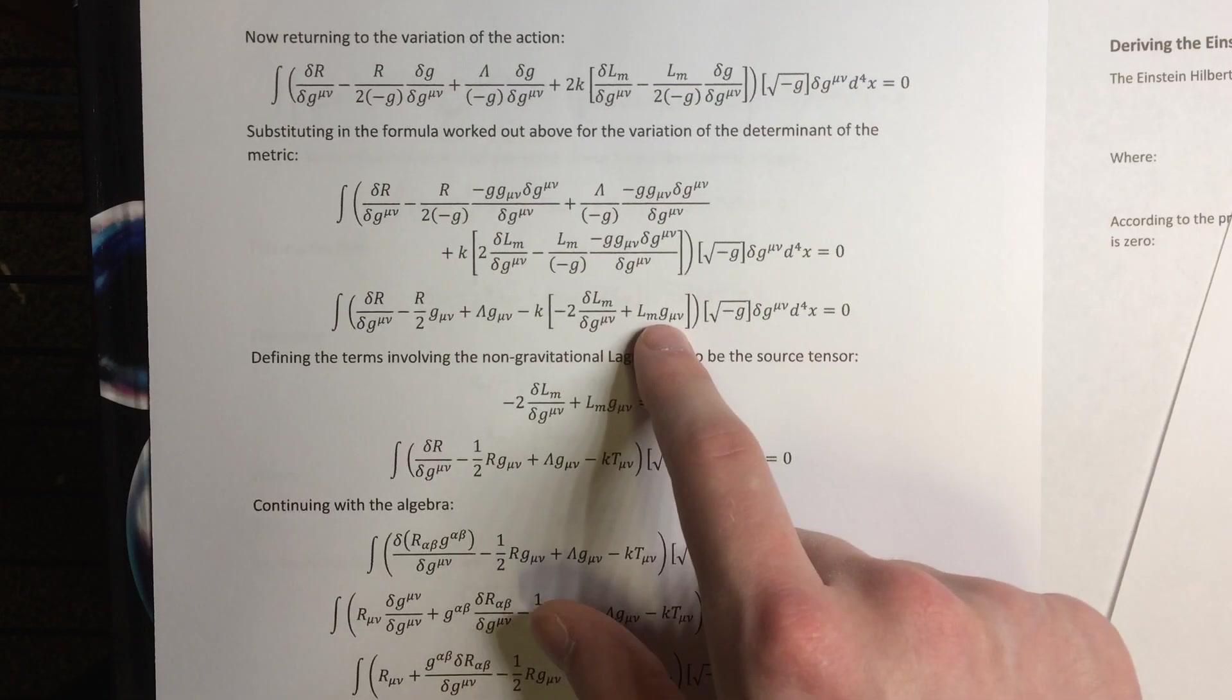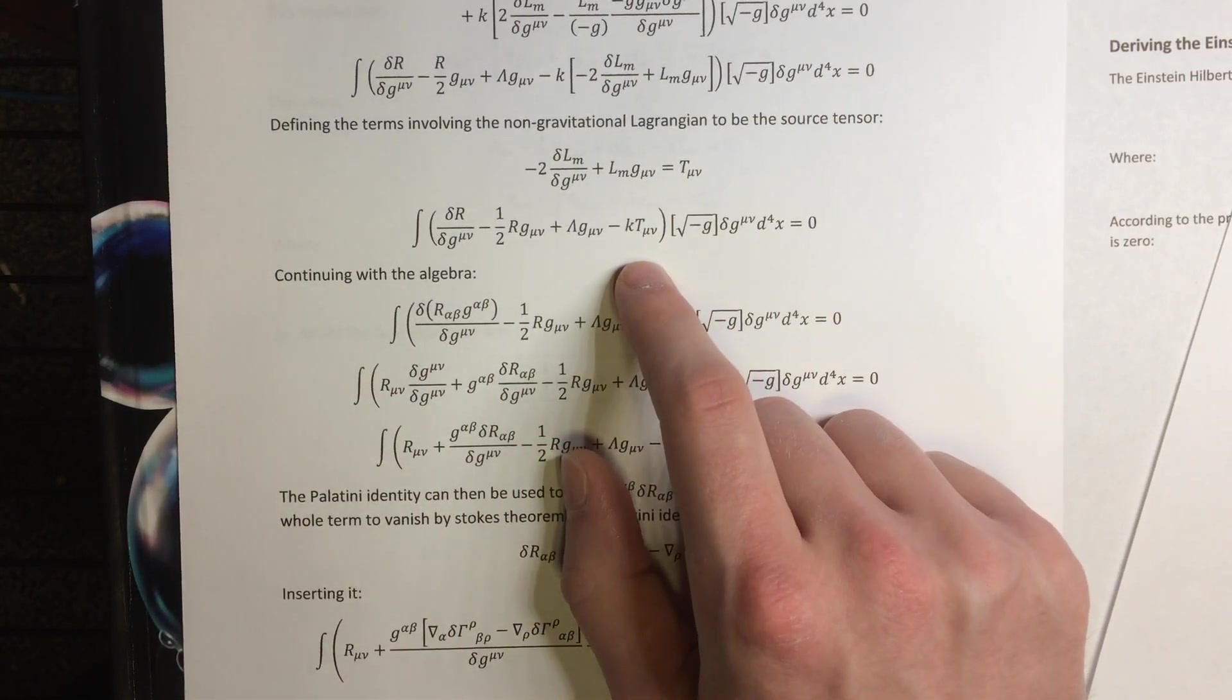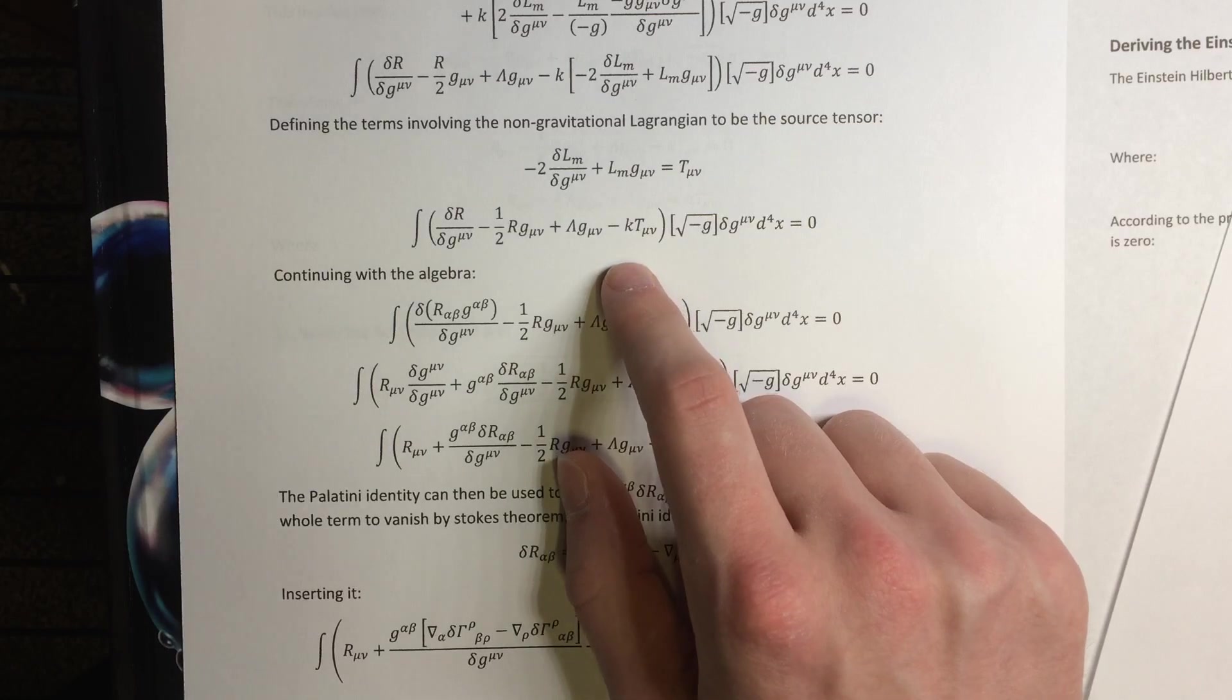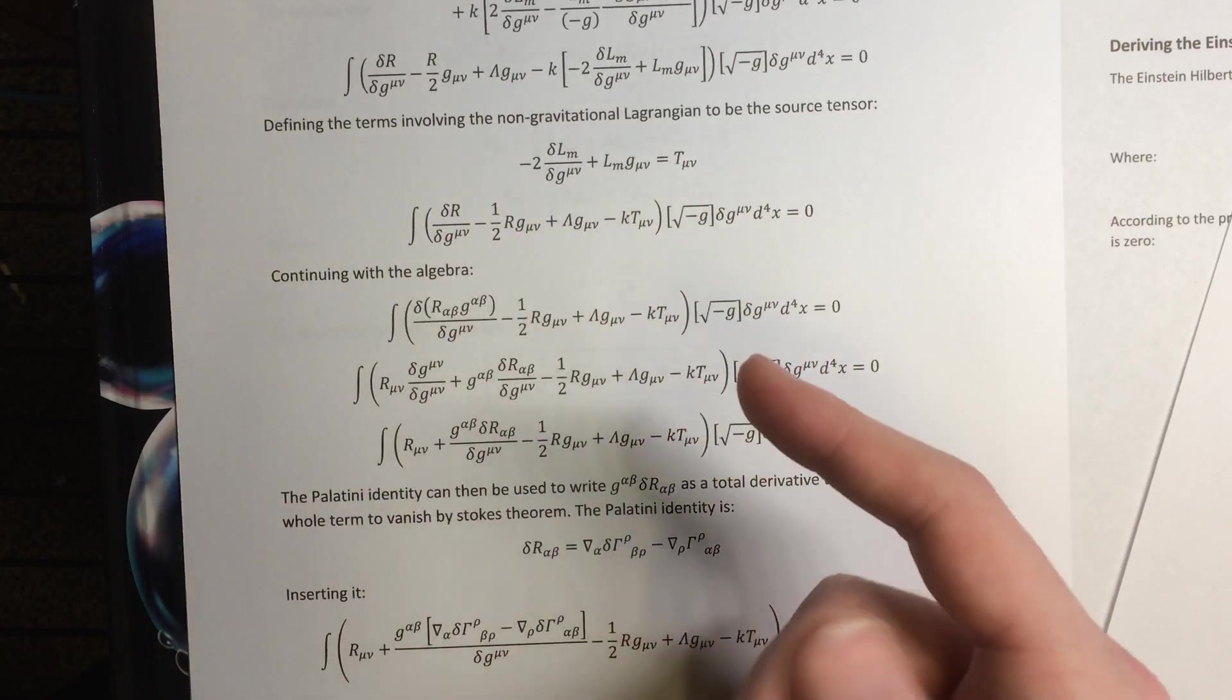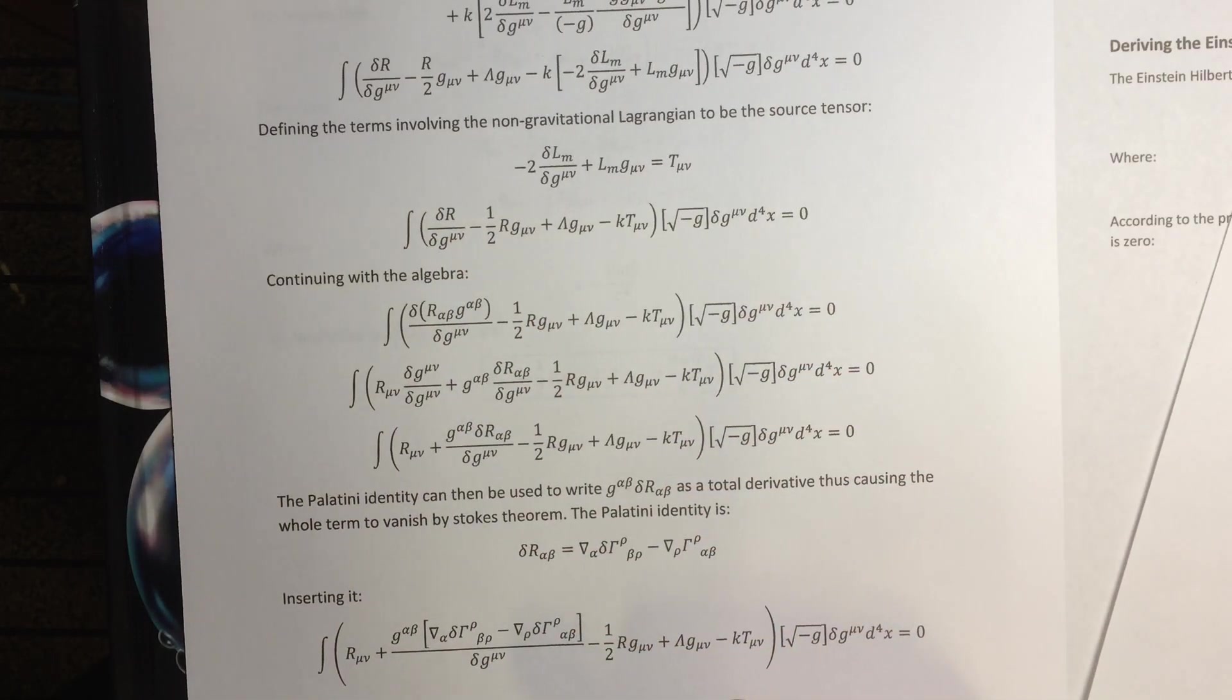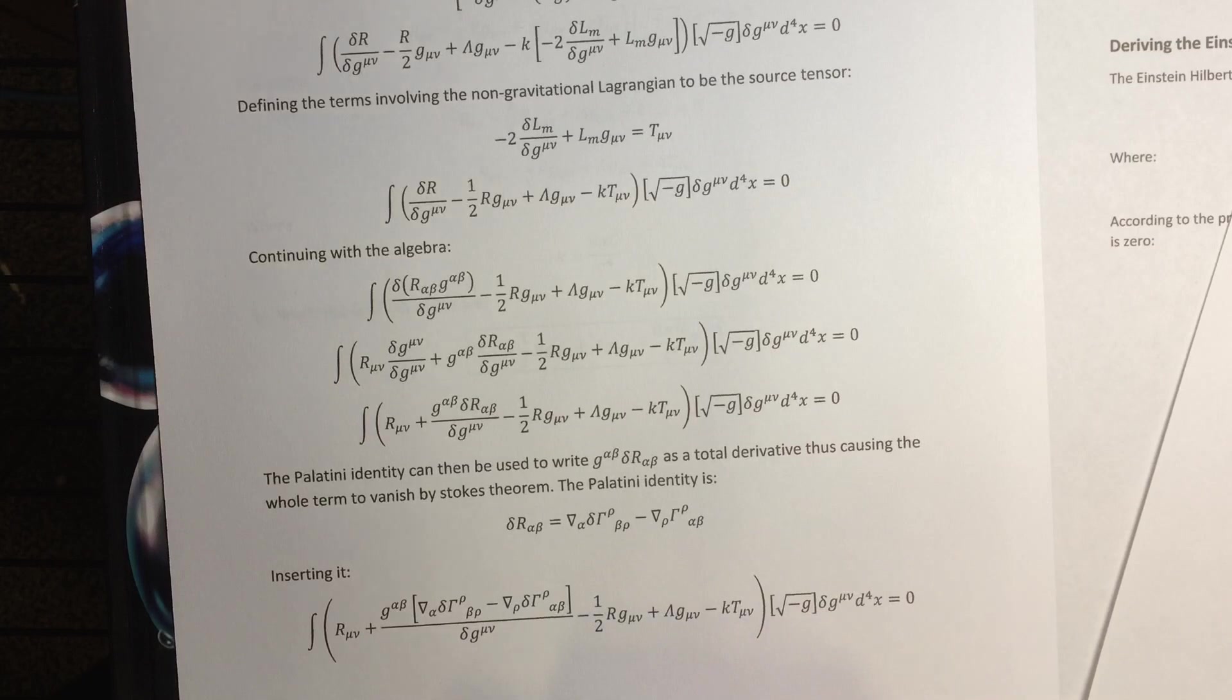First, letting that cancel just gives this, and then substituting that identity in gives us something that almost looks like the Einstein field equations. We almost have it. The only thing that's different is we're missing the Ricci curvature tensor term, and we've got this here instead. So we can immediately see that somehow, this is going to turn into the Ricci curvature tensor. But it's actually not altogether obvious how. In fact, we have to use a special identity that I already dedicated a whole separate video to deriving in order to do it called the Palatini identity.